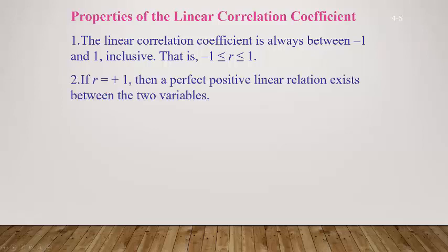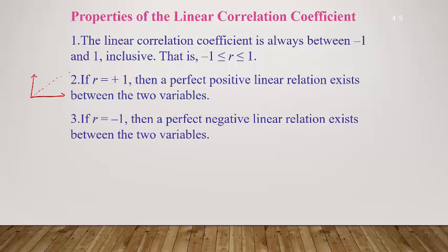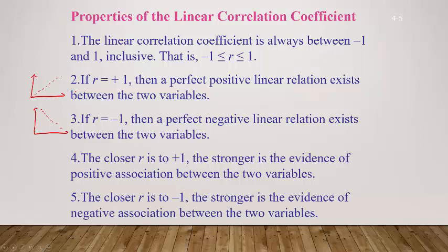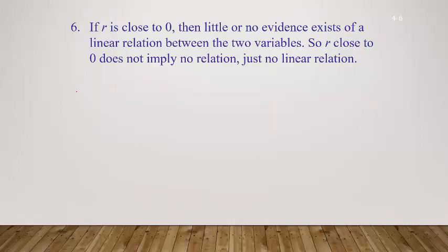If R equals positive 1, a perfect positive linear relationship exists — the scatter plot is a perfect straight line. If R equals negative 1, a perfect negative linear relationship exists — a perfect straight line with a negative slope. If R is closer to positive 1, like 0.9 or 0.8, the stronger the evidence of a positive association. If R is close to negative 1, the stronger the evidence of a negative association.